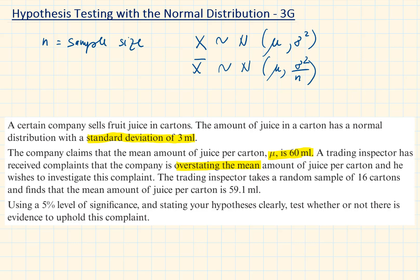This trading inspector takes a random sample of 16 cartons and finds that the mean amount of juice per carton is 59.1 milliliters. Using a 5% level of significance and stating your hypothesis clearly, test whether or not there is evidence to uphold this complaint.